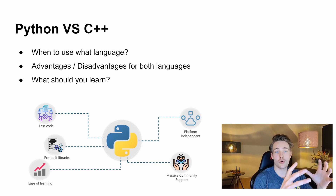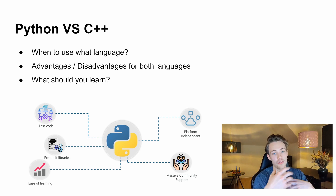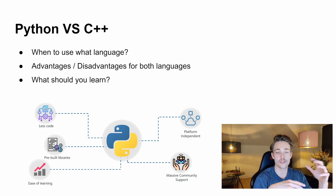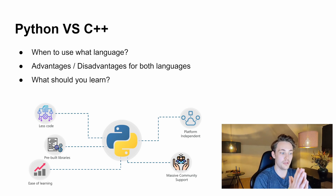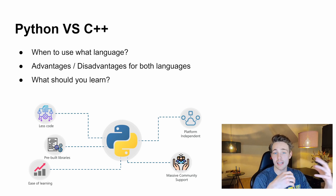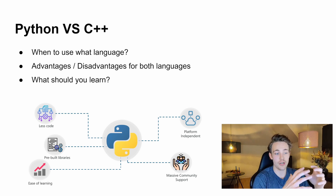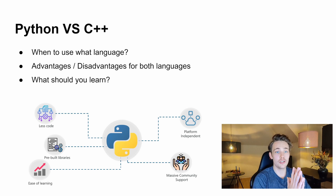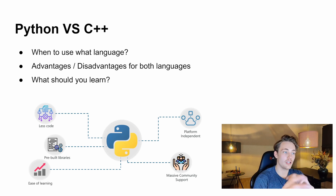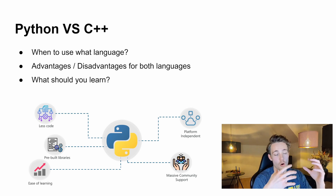If you're just starting out with artificial intelligence and deep learning and you're not really familiar with implementing these things, you should definitely just go with Python. It's the easiest — you don't need to think about data structures or data types. You just use Python; it's really nice, it's less code, we have a lot of pre-built libraries and API wrappers to C++ code. There's ease of learning, so if you're new, just go with Python and you can always convert to C++ later.